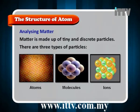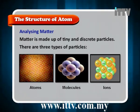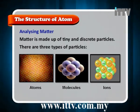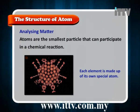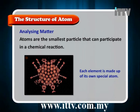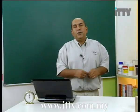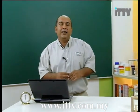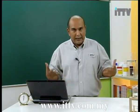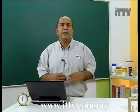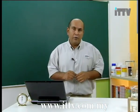We know that matter is made up of tiny discrete particles. There are three types of particles: atoms, molecules, and ions. Atoms are the smallest particle that can participate in a chemical reaction. Each element is made up of its own special atom. The atom is the basic unit of all matter.